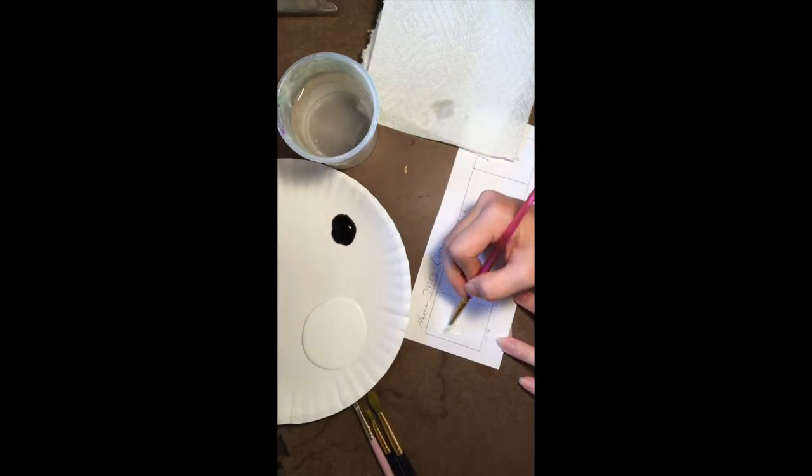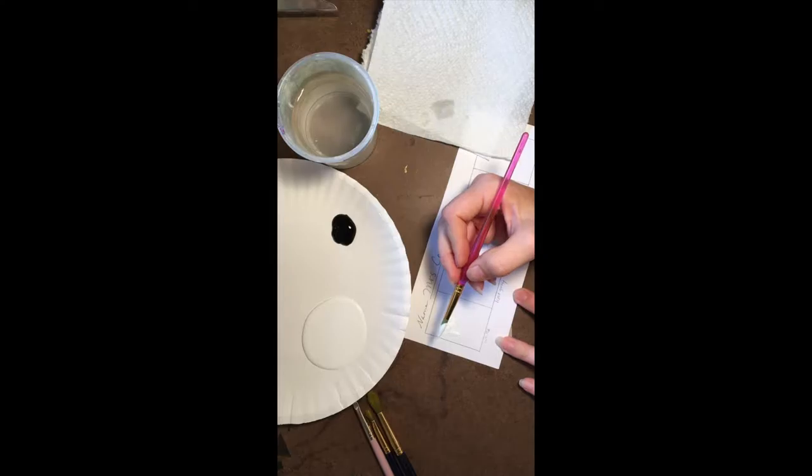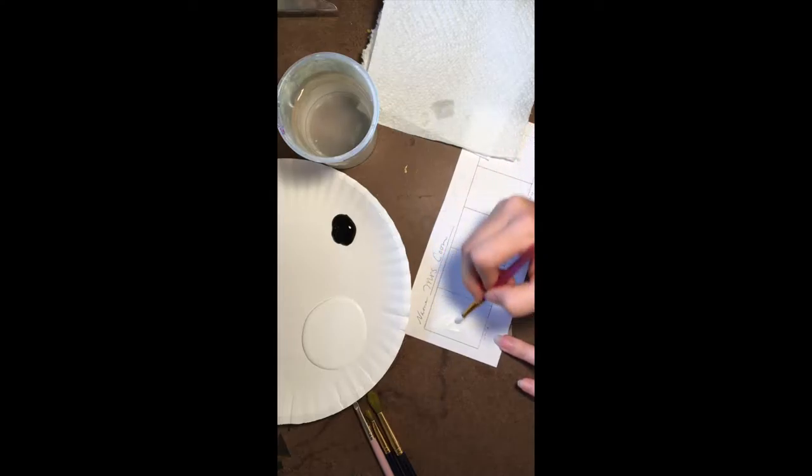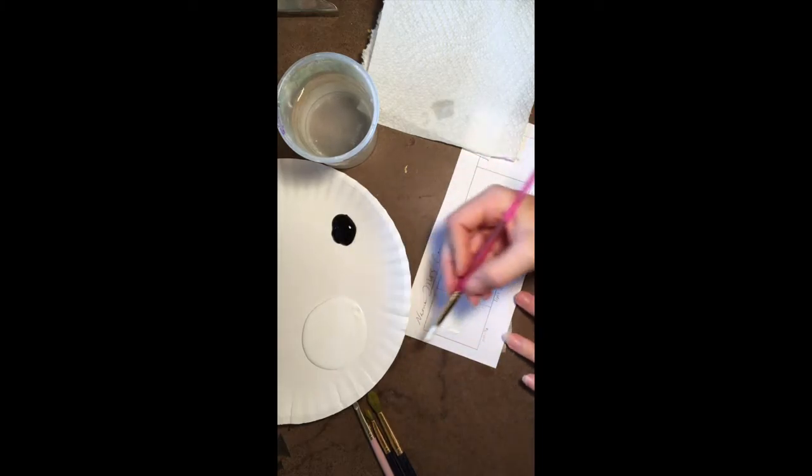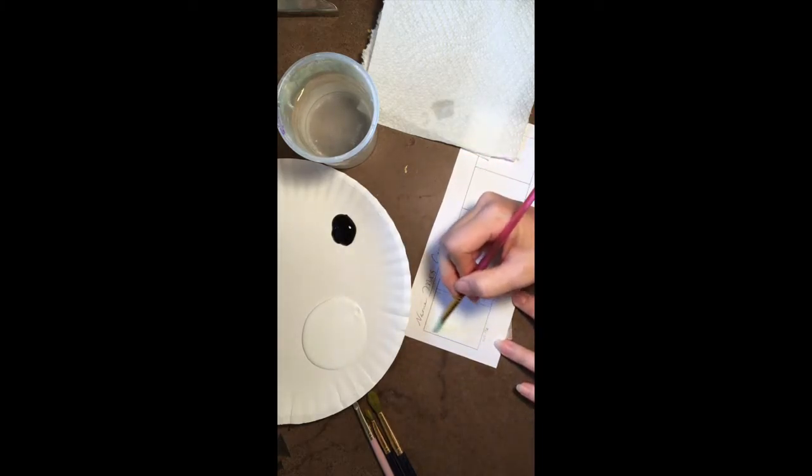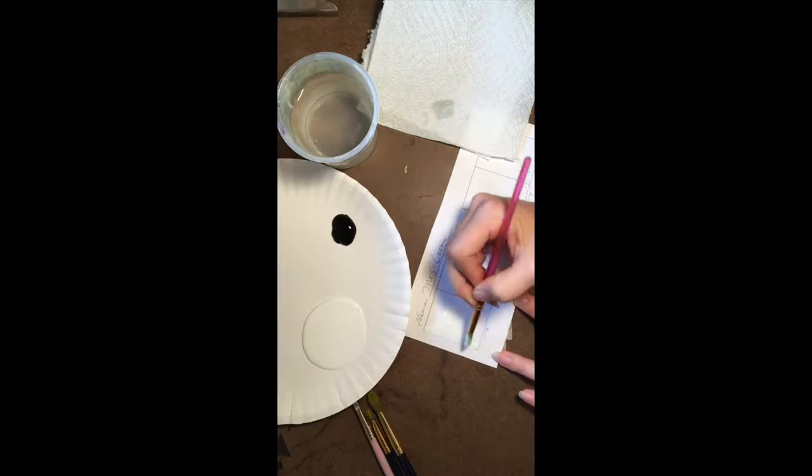Some things to think about. You want to treat your paint brush like she's a delicate ballerina. Don't be rough with her, don't scrub with her, don't push down. You want to keep her on her toes and gently sweep back and forth. We're trying to fill all the way up to the line and stay inside of the lines. Take your time and make it look nice and even.